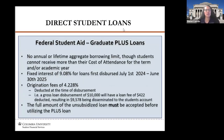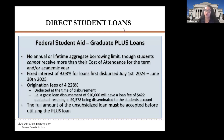Then we have the graduate plus loan. For this loan there's no annual or lifetime aggregate borrowing limit — basically the maximum amount you can take out is your cost of attendance. The interest rate is 9.08% and it has an origination fee of 4.228%. With the combination of your unsubsidized loan and your graduate plus loan, you can finance the cost of your education at Columbia, whether you're only looking for tuition and fees or if you're looking for a refund for living expenses.